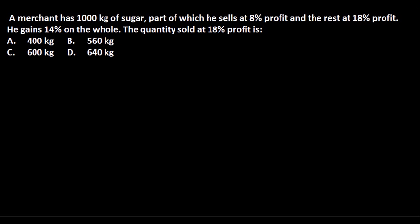Okay guys, let's solve another problem related to allegation and mixtures. A merchant has 1000 kg of sugar, part of which he sells at 8% profit and the rest at 18% profit. He gains 14% on the whole. The quantity sold at 18% profit is...